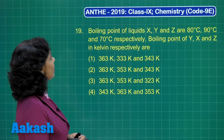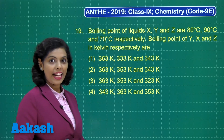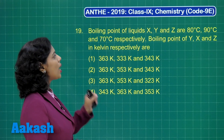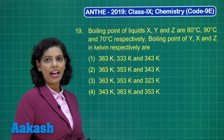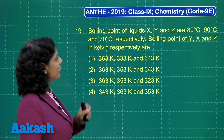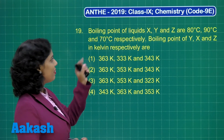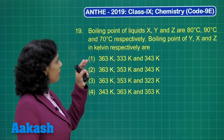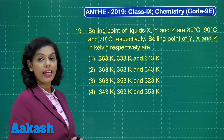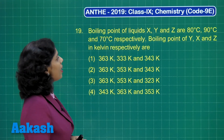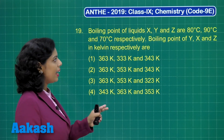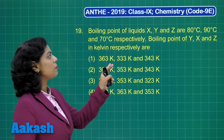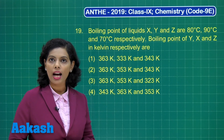Here is the next question, question number 19. The boiling points of liquid X, Y and Z are 80 degrees Celsius, 90 degrees Celsius and 70 degrees Celsius respectively. We have three liquids with different boiling points. Now the boiling points of Y, X and Z in Kelvin respectively are to be found.